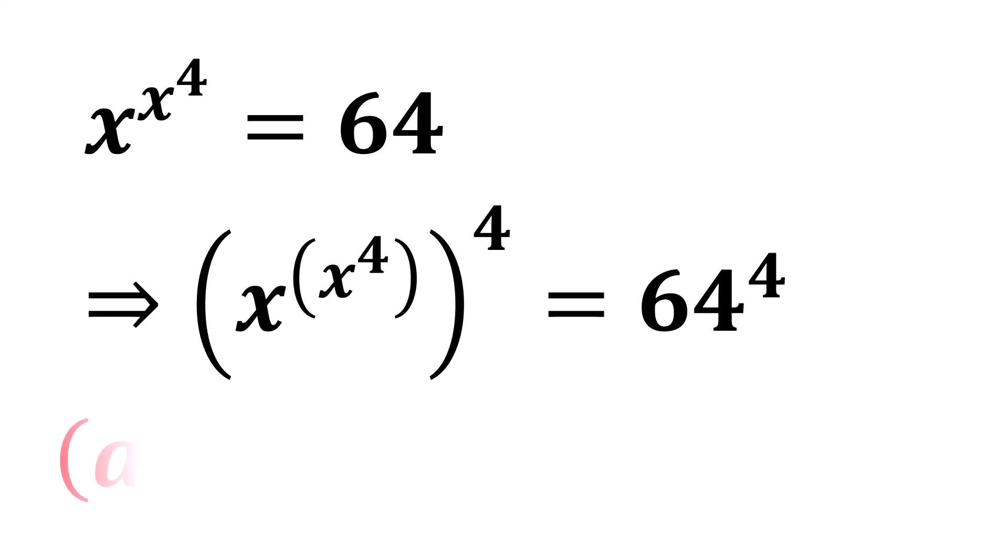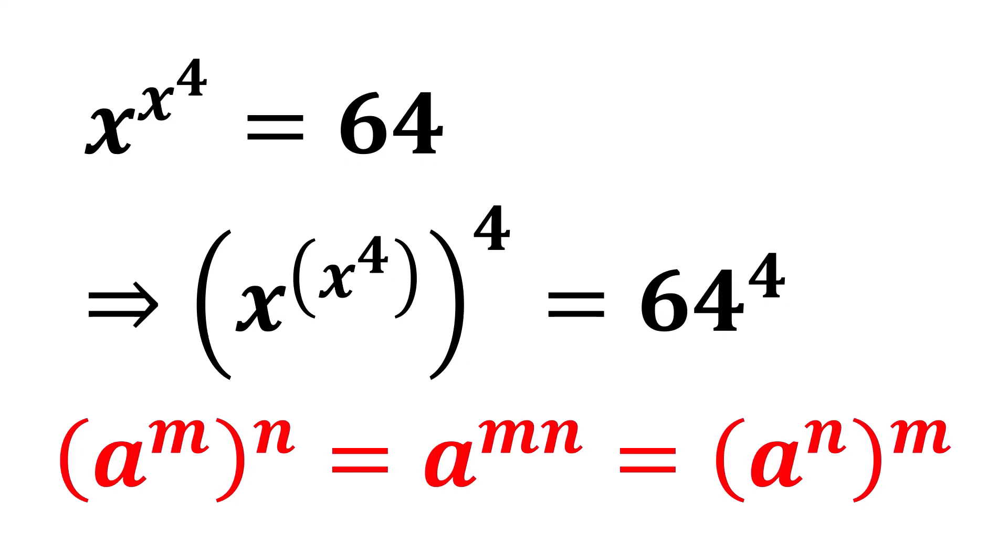Applying the identity, a to the power m raised to the power n is equal to a to the power m times n, which is also equal to a to the power n raised to the power m.